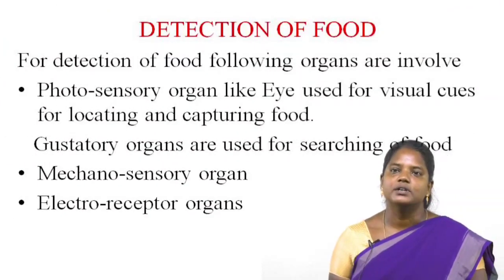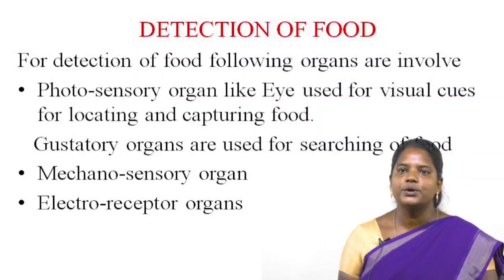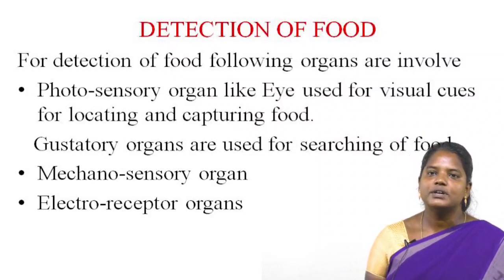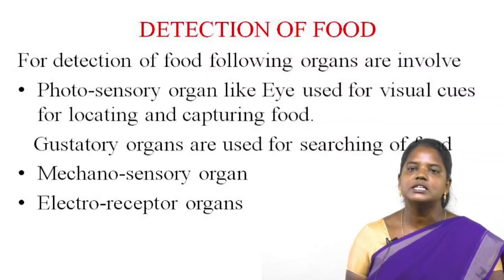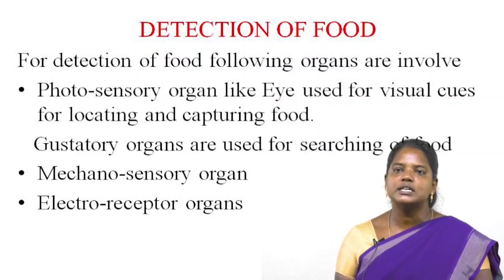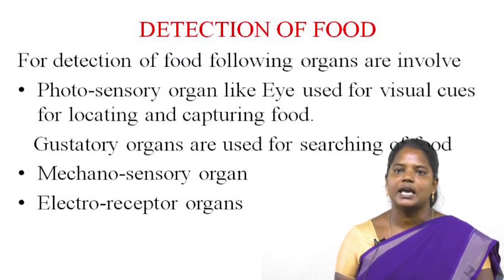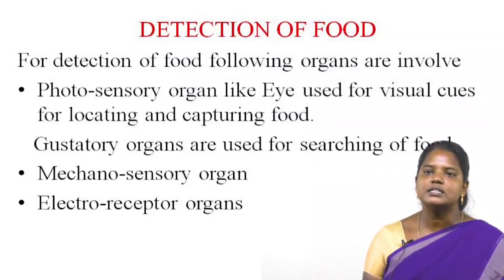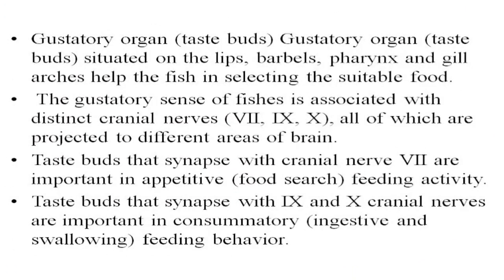For detection of food in feeding habits of fishes, the following organs are involved: first, photosensory organs — used for visual cues for locating and capturing food; second, gustatory organs — used for searching of food; third, mechanosensory organs; and fourth, electroreceptor organs — used for detecting electromagnetic waves.